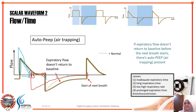Another cause of auto-PEEP is a respiratory rate that is too high, because a high rate shortens expiration time. You can reduce the RR so that each breath cycle is longer and E time increases. Increasing the RR does nothing to the I time — it will stay the same — but starting the next breath later gives a longer E time.